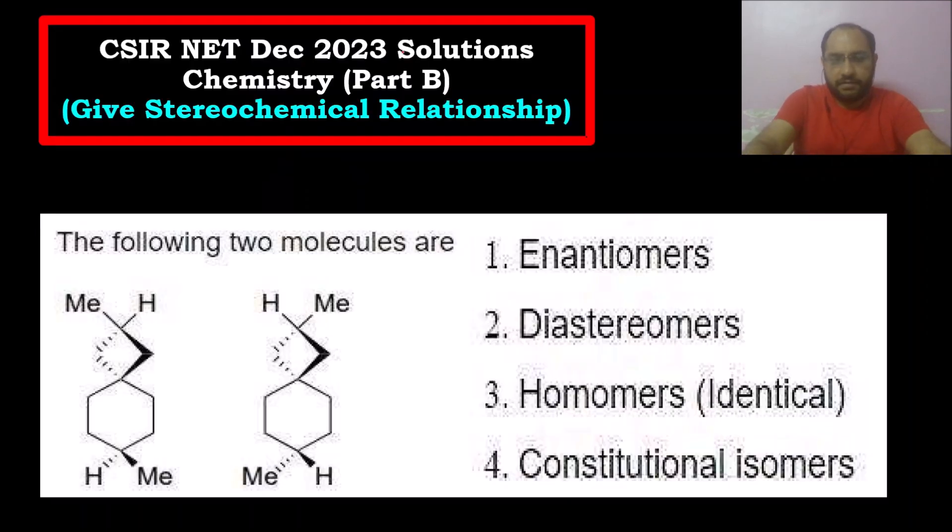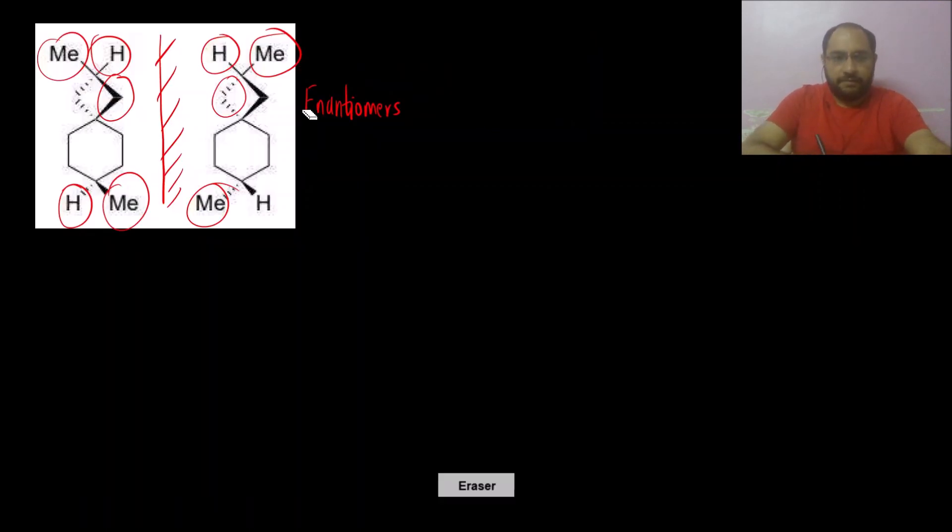So suppose you mark the answer as option one, enantiomer. Is this correct? The answer will be incorrect. Why?